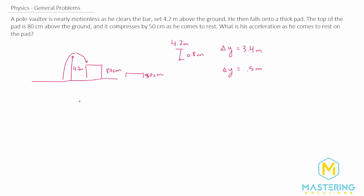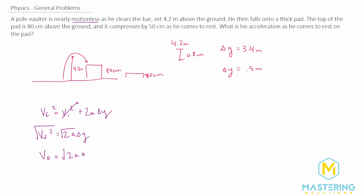Now we need to find his speed right when he hits the pad. We'll use: v_final² = v_initial² + 2a·Δy. The initial velocity is zero because he's motionless as he clears the bar, so that term goes away. The final velocity is equal to the square root of 2 times the acceleration times delta y. He's moving in the negative y direction, so delta y is negative 3.4 meters.